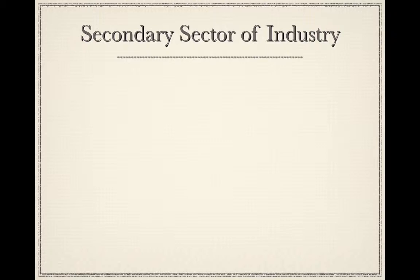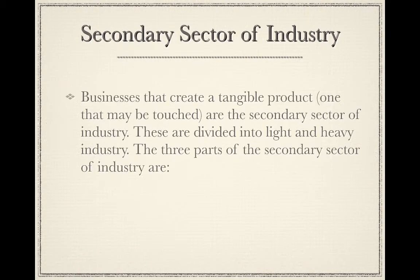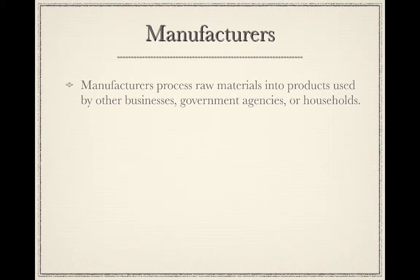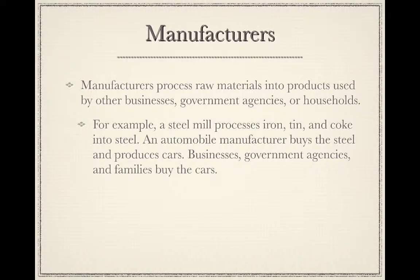The secondary sector of industry consists of businesses that create a tangible product — one that may be touched. These are divided into light and heavy industry. The three parts of the secondary sector are power generation, manufacturing, and construction. Manufacturers process raw materials into products used by other businesses, government agencies, or households — for example, a steel mill processes iron, tin, and coke into steel.